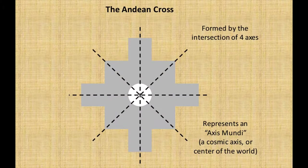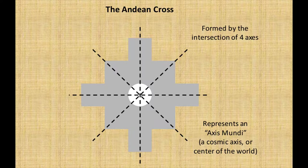This cross is formed by the intersection of four axes: a vertical, a horizontal, and then two axes at 45-degree angles to those. So it's an axis mundi — a world axis or cosmic axis — representing a coming together of many different directions. The one interpretation I came across consistently, over and over again, was that the circle in the middle of this cross represents Cusco.